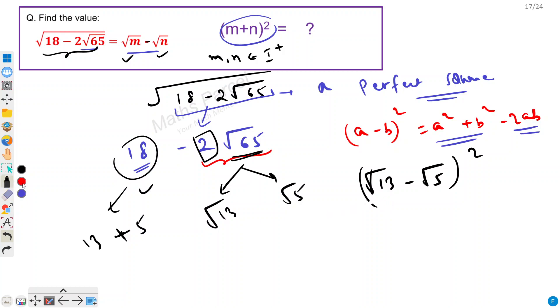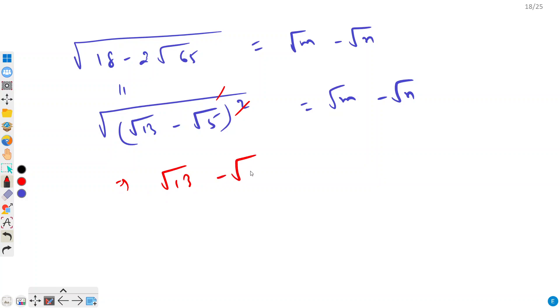Now this simplifies our problem because we can get rid of this square root now. So we can rewrite this whole problem as square root of (√13 - √5)². Now we can get rid of this square root. So we can rewrite this as √13 - √5 = √m - √n.